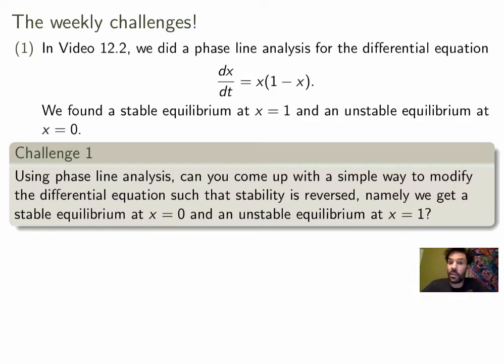Here's the first one. In the previous video we did phase line analysis and we studied differential equation dx/dt equals x times 1 minus x. What we found is a stable equilibrium at x equals 1 and an unstable one at x equals 0.